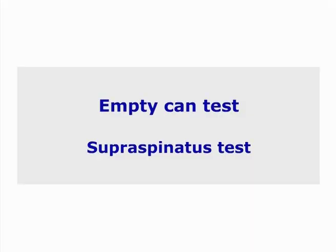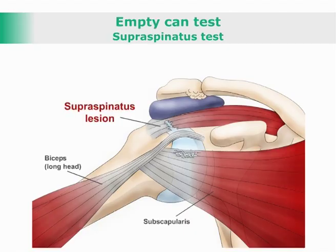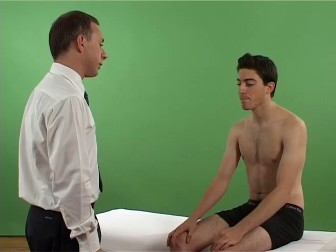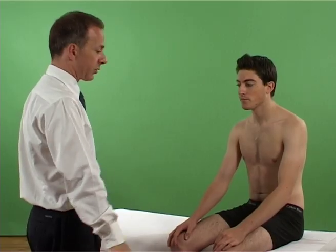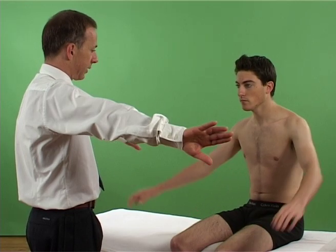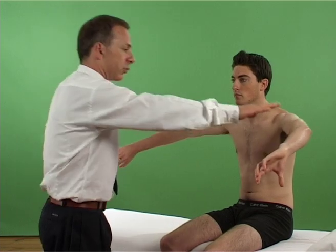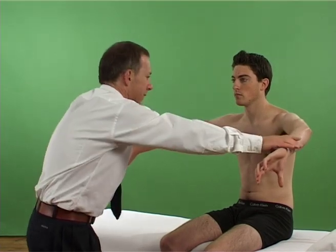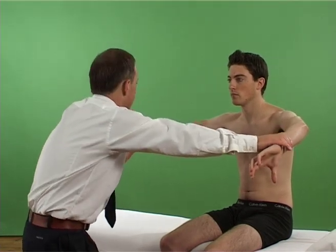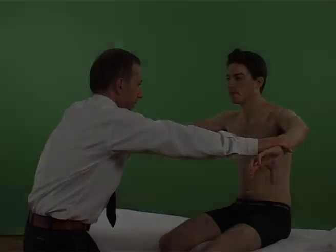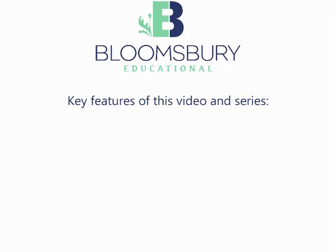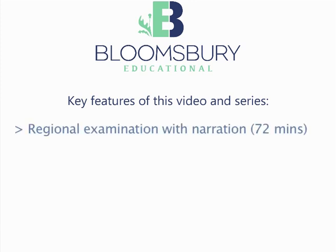Empty can test — supraspinatus test. With the arm held in abduction at 90 degrees, the arm is then lowered to 30 degrees and rotated internally.